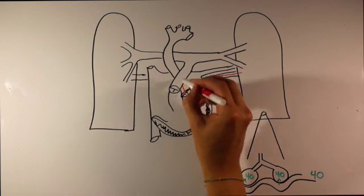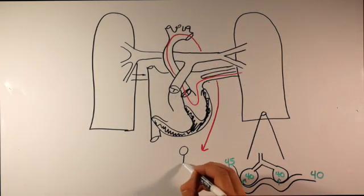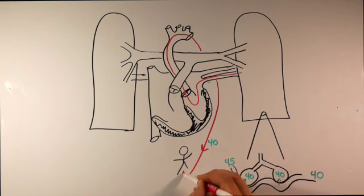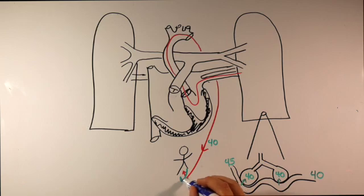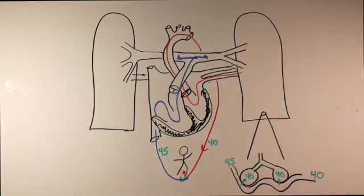This blood returns to the heart via the pulmonary veins, then exits the heart to supply the body with oxygen. The body extracts the oxygen and releases CO2 that was generated by cellular metabolism back into the blood. This is carried back to the heart and then back to the lungs via the pulmonary artery to start the whole process again.